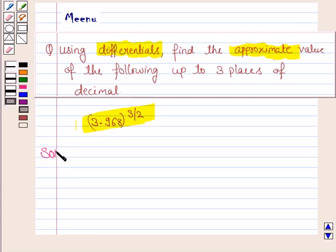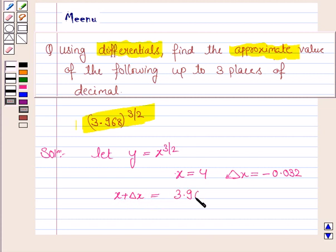Let's now proceed on to the solution. And let's define y as a function of x. So define y equal to x to the power 3 by 2 and here we take x in such a way so that we can easily find out the square root. And since we need to have x plus delta x is equal to 3.968, we take delta x as minus 0.032. So x plus delta x is equal to 3.968.